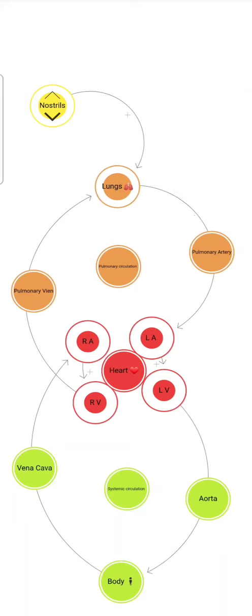Then it goes to the LA, left auricle, then to the LV, left ventricle. Now the blood is already oxygenated. Then it will go to the body by aorta.